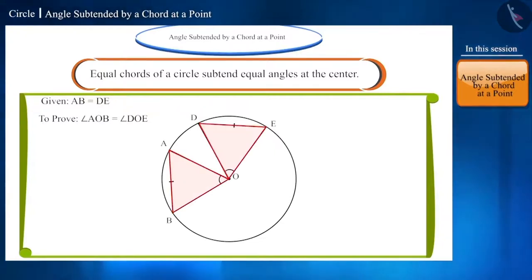If we prove these two triangles to be congruent, then these two angles will also be equal, because the corresponding parts of congruent triangles are equal.